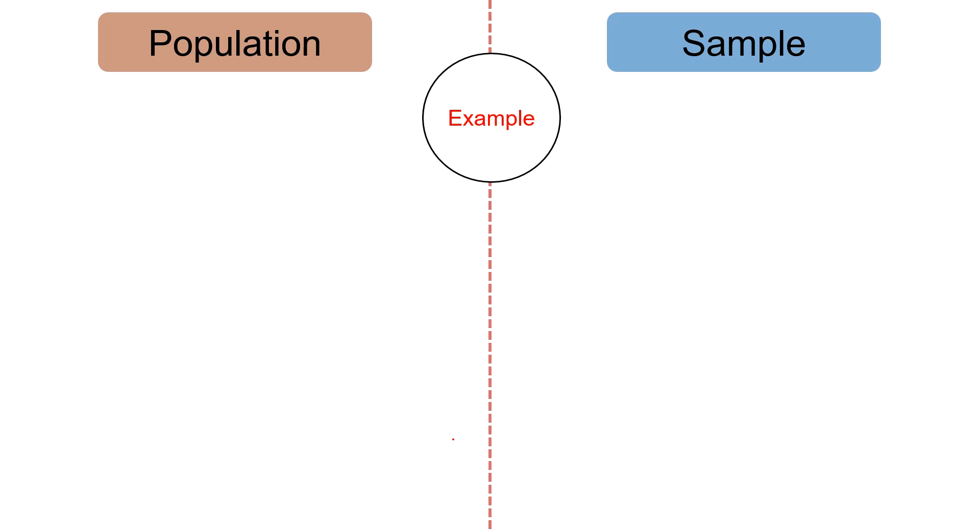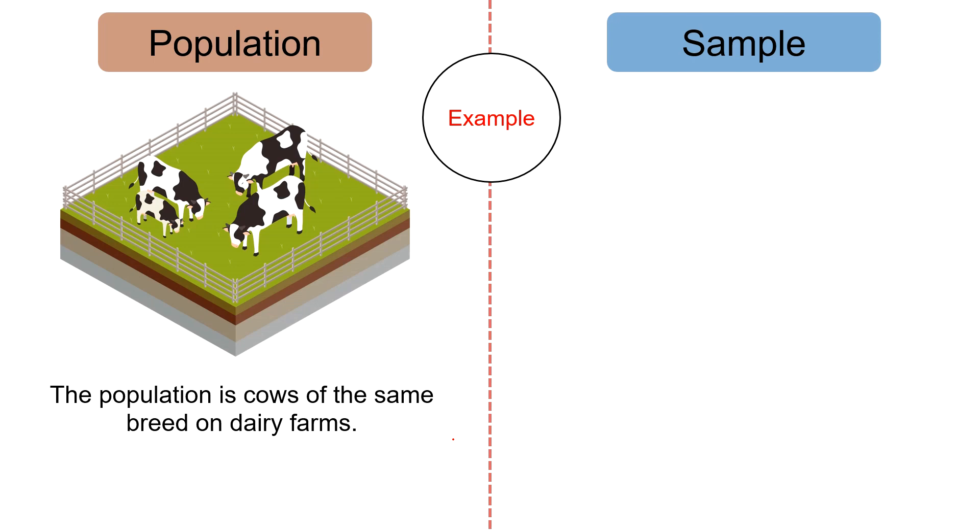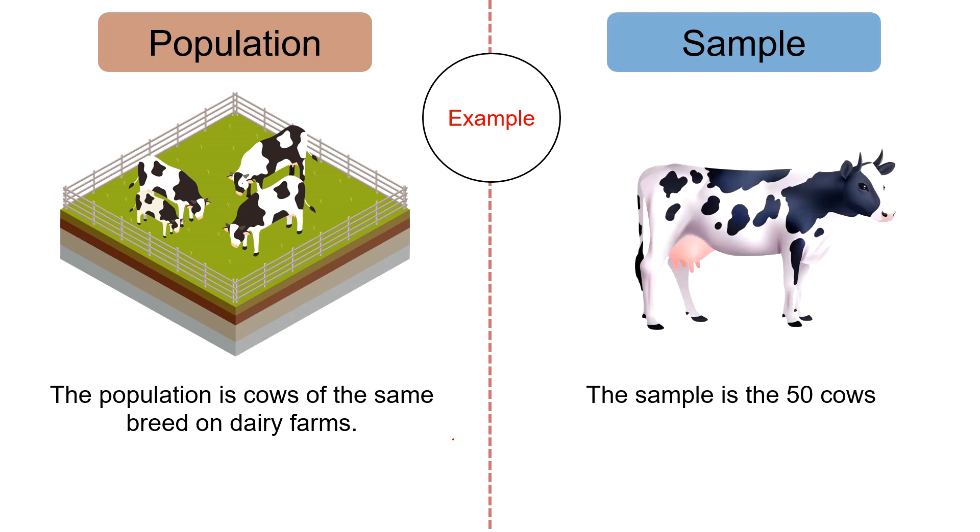Next, example. In the cow dataset, the population is cows of the same breed on a dairy farm. Whereas the sample is 50 cows.